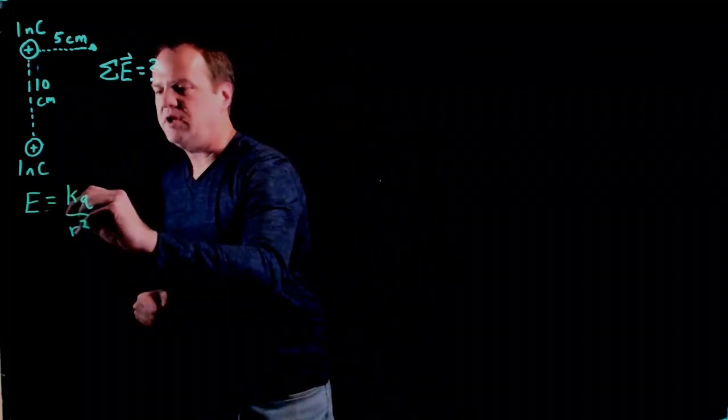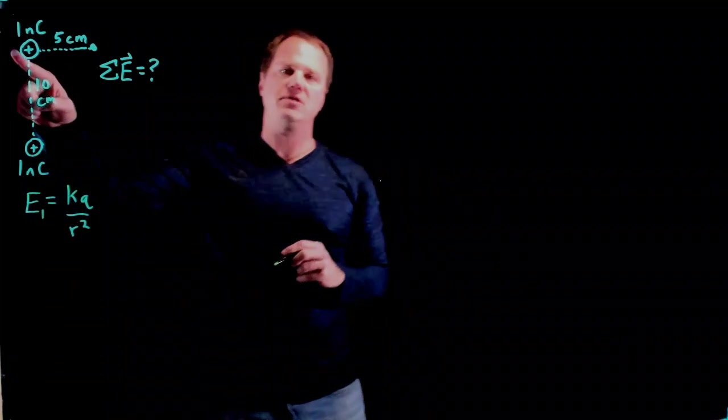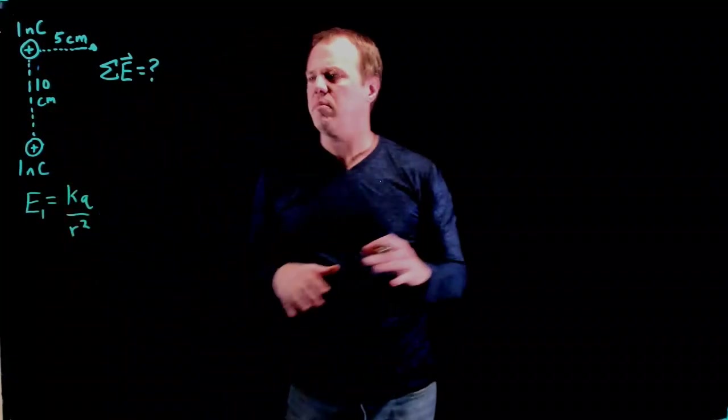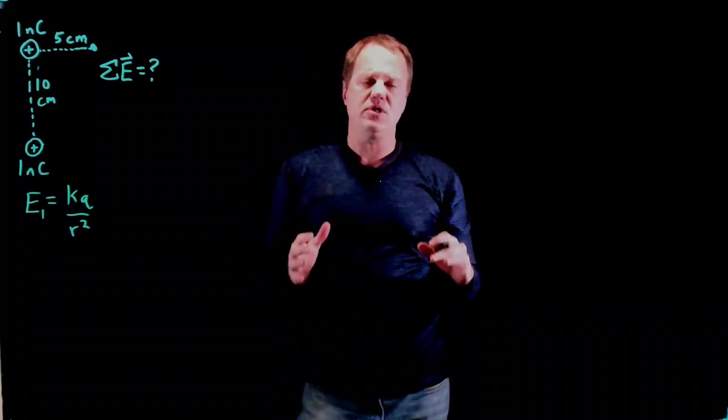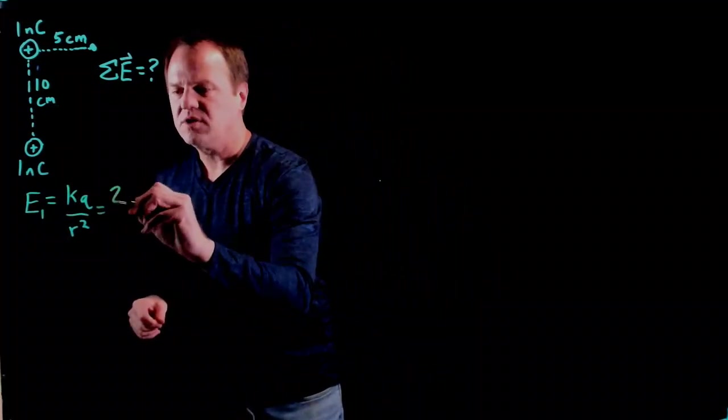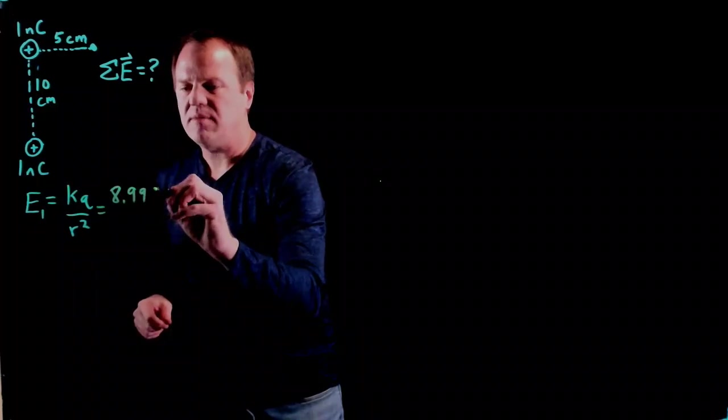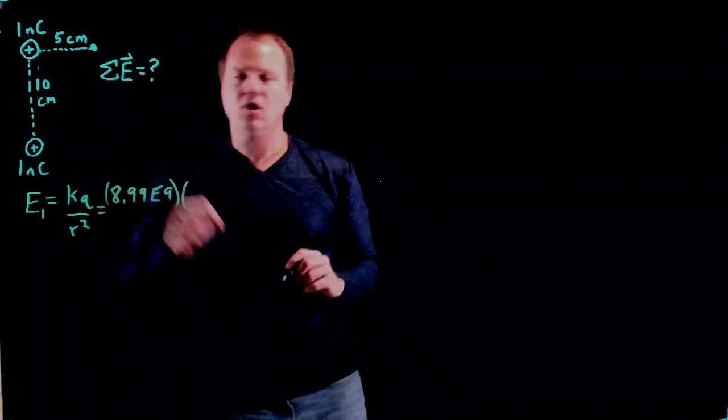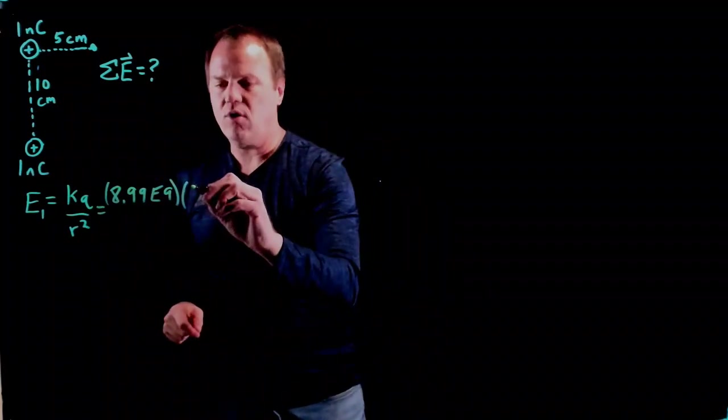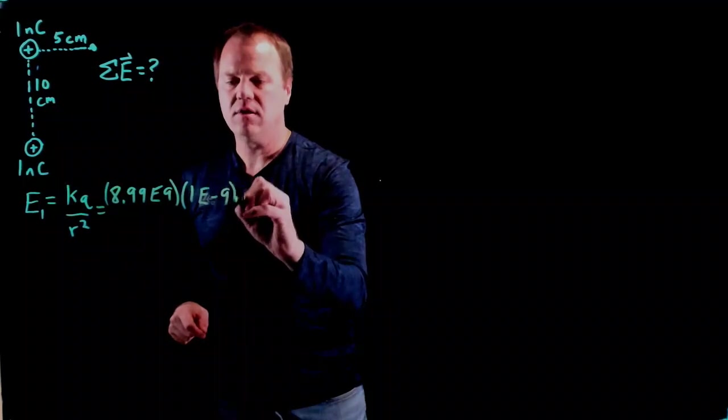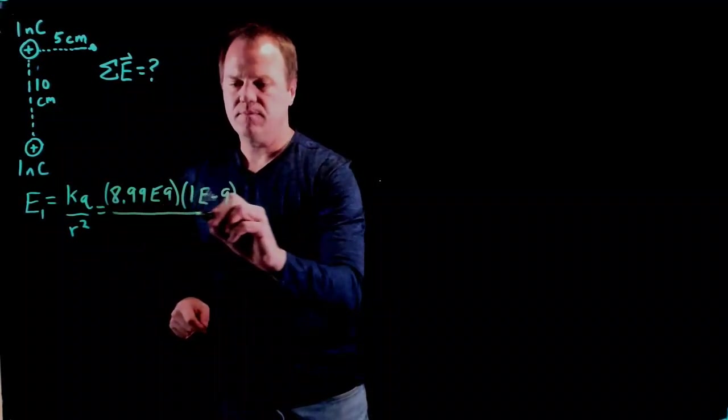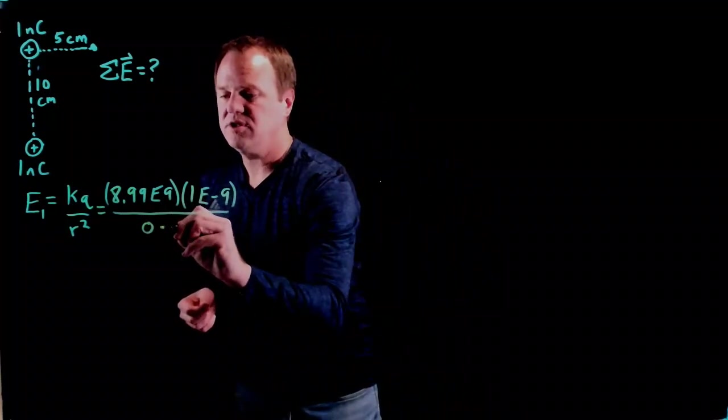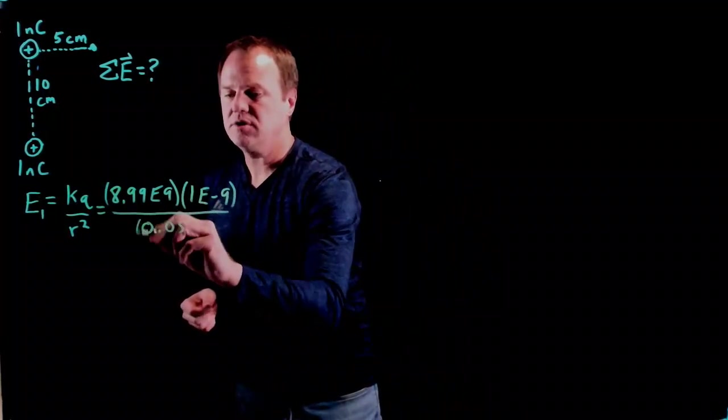For the first electric field, which I'm going to call the field from this charge object here, I can just throw in numbers into the formula, just taking care to use SI units. So 8.99 times 10 to the ninth for the constant associated with electricity. q is one nanocoulomb, so one times 10 to the minus ninth coulombs, and then the distance is in centimeters, I'm going to convert that to meters, so 0.05 meters.